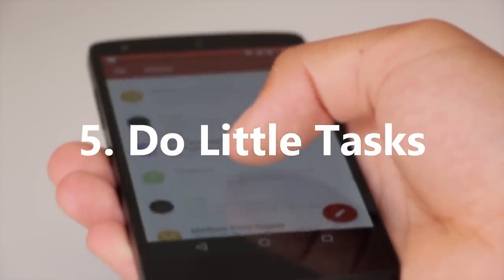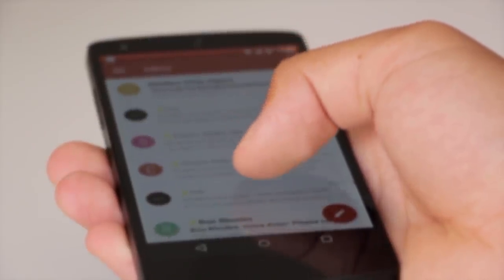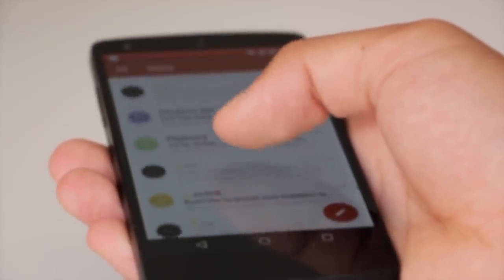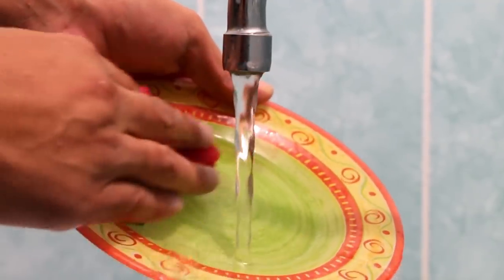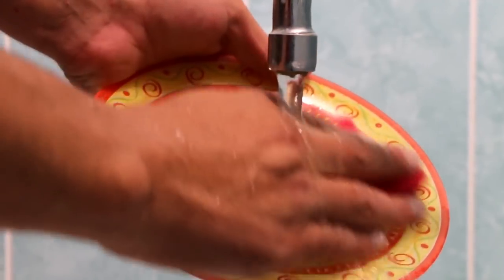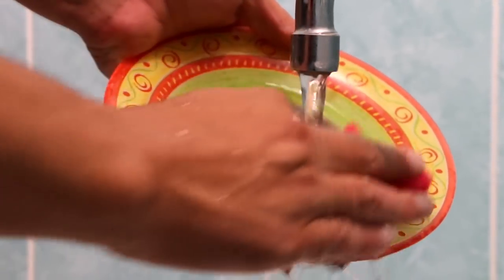5. Do Little Tasks. If you're bored then simply put, identify little tasks that you can do and get them out of the way. Chances are, these little tasks are things that you're going to have to get done at some point, and if left alone could build up to become bigger tasks.